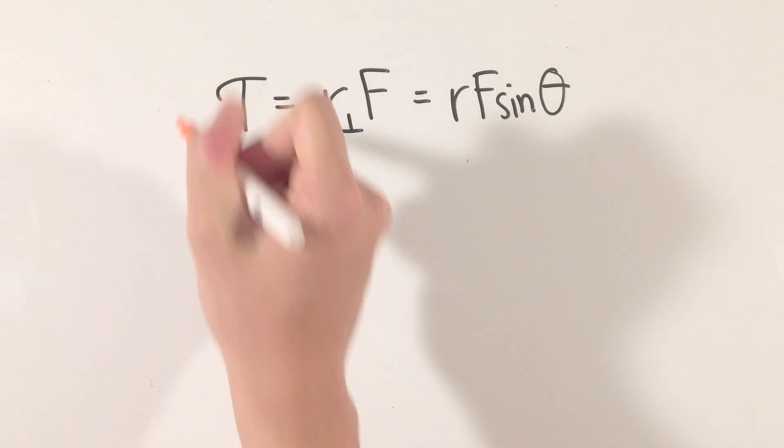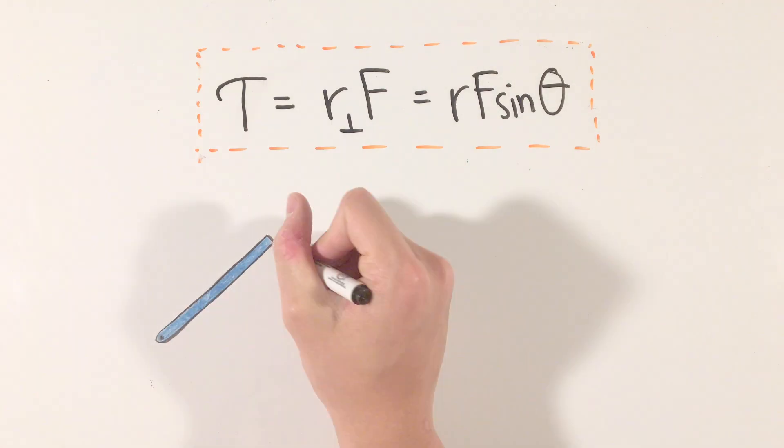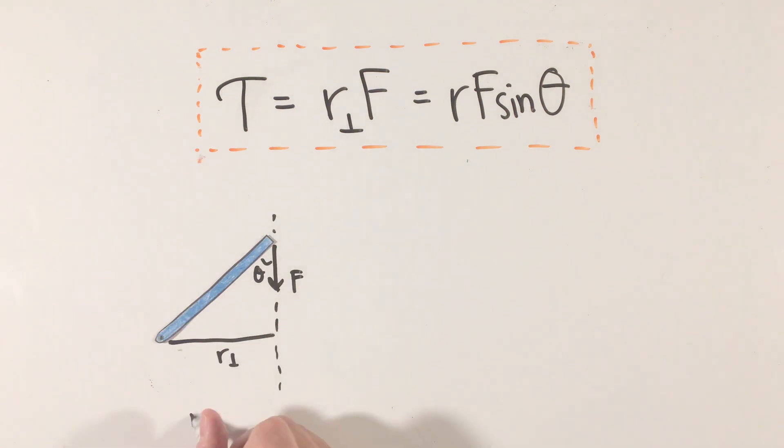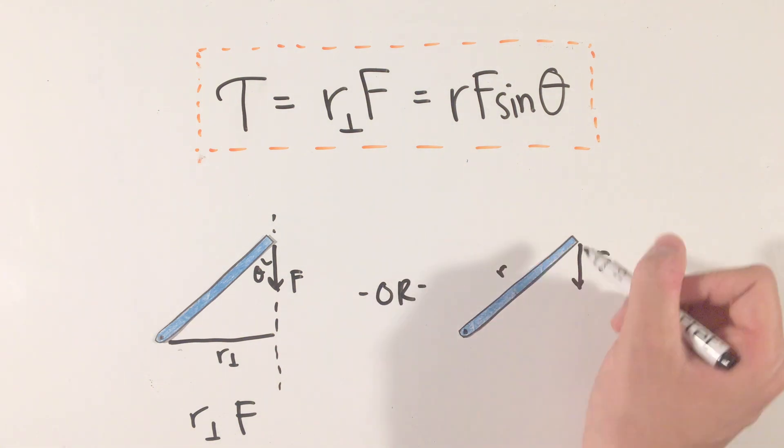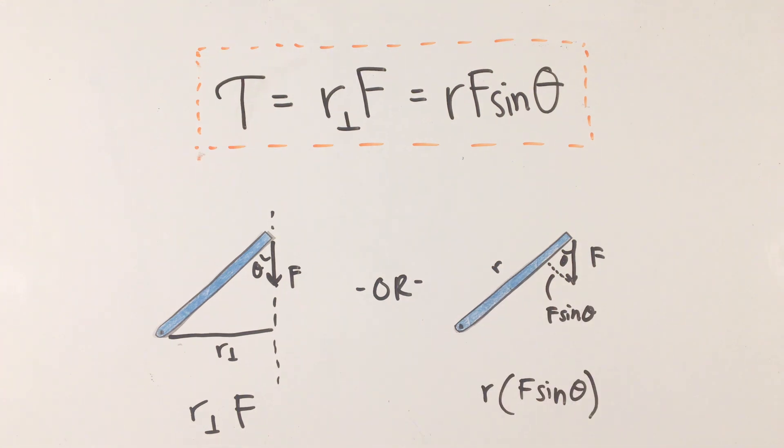Torque, denoted by the Greek letter tau, is equal to the force applied times a quantity called the lever arm, where the lever arm is defined as the perpendicular distance from the axis of rotation or revolution to the line of application of the force, equal to r sine theta. Another way to think about torque is the radius, or distance between axis and point of force application, times the force component perpendicular to this radius.